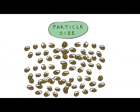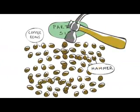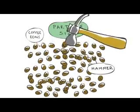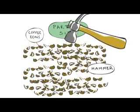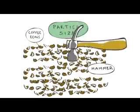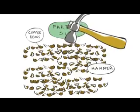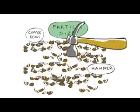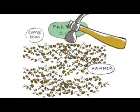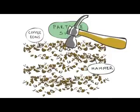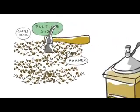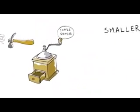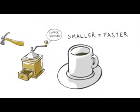Next on the list is particle size. If a solid reactant is broken into pieces, there's more surface area, so more particles are exposed to the other reactants. As a result, there's a greater chance of a collision, so the rate of reaction increases. Even better is grinding them up into a powder — that really speeds things up.